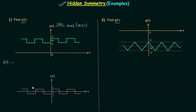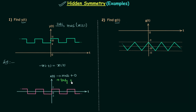Signal xt is obtained after pushing signal yt downward and it is clear that signal xt is a half wave symmetric signal and also it is an odd signal. After performing the time reversal and amplitude reversal we will get the same signal xt, therefore it is an odd signal. For an odd half wave symmetric signal there will be only sine terms with odd harmonics in the Fourier series expansion, so signal xt will have only sine terms with odd harmonics.